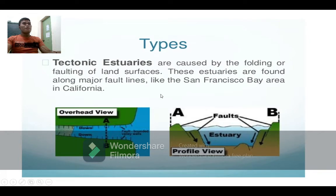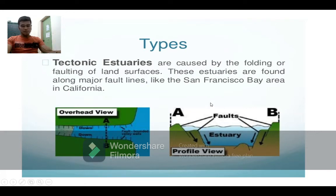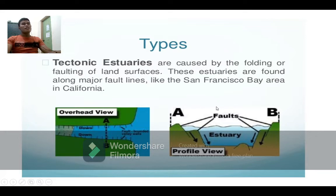The second type is the tectonic estuary. Tectonic estuaries are caused by the folding or warping of the land surface. These estuaries are found along major fault lines, like the San Francisco Bay area in California. This tectonic estuary was formed because of fault lines — cracks along the crust of the earth.